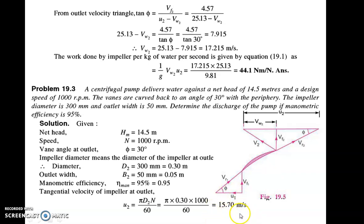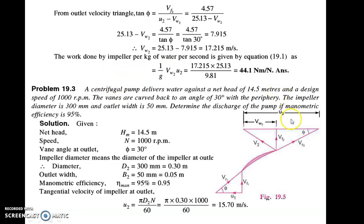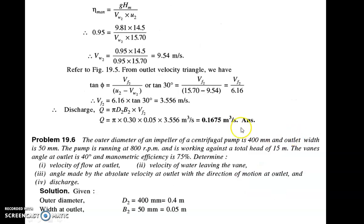From the manometric efficiency formula: manometric efficiency = G HM upon Vw2 U2. With manometric efficiency = 95%, HM = 14.5 m, and U2 = 15.70 m/s, you can find Vw2. Vw2 is found first from this formula, giving Vw2 = 9.54 m/s. Then from the outlet velocity triangle, tan(phi) = Vf2 upon (U2 minus Vw2). So tan(30°) = Vf2 upon (15.70 minus 9.54) = Vf2 upon 6.16. Therefore Vf2 = 6.16 × tan(30°) = 3.556 m/s.